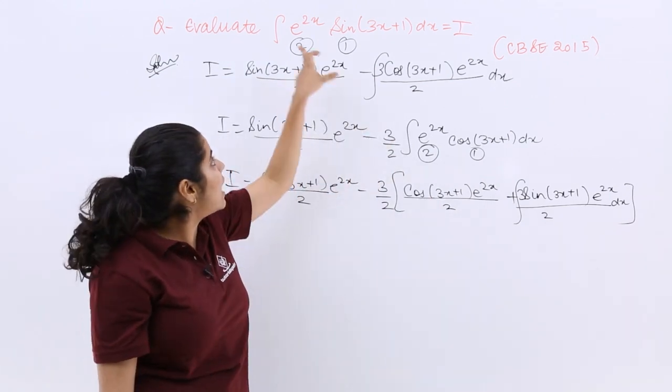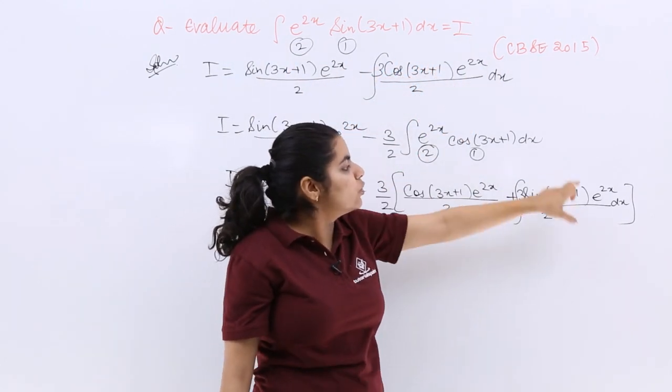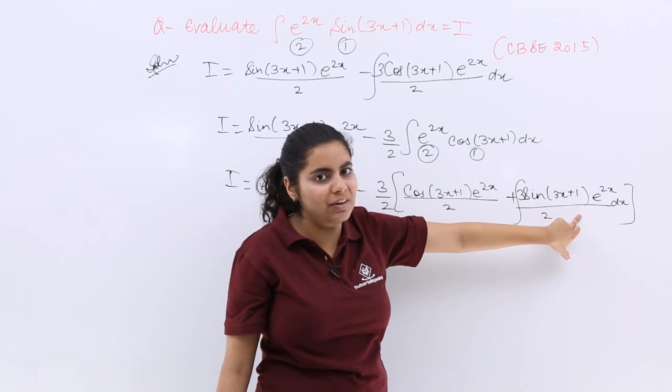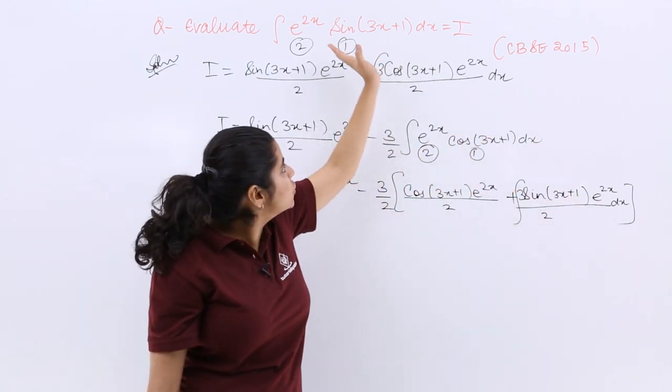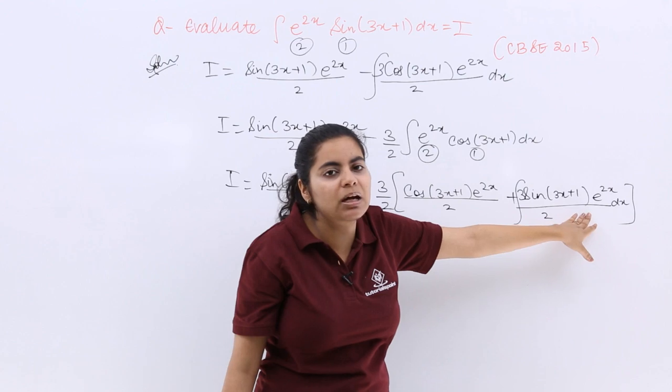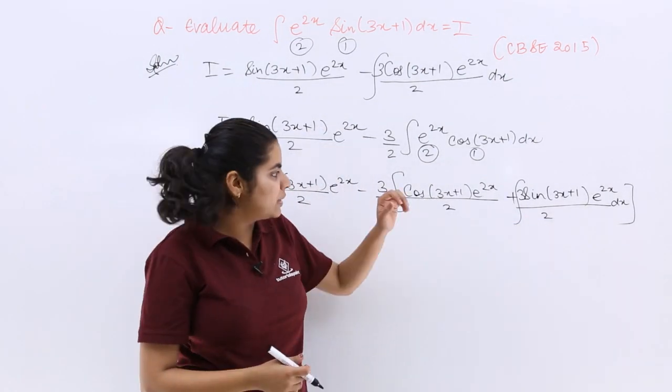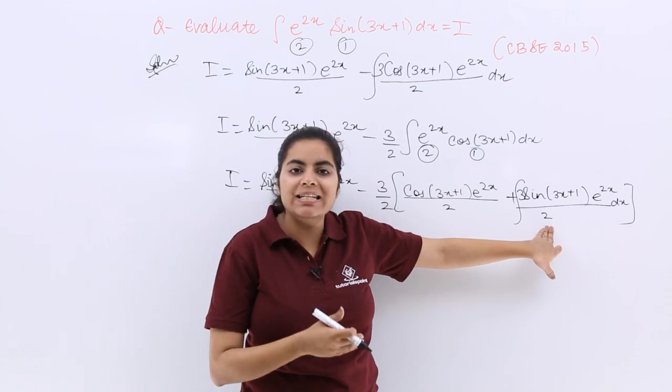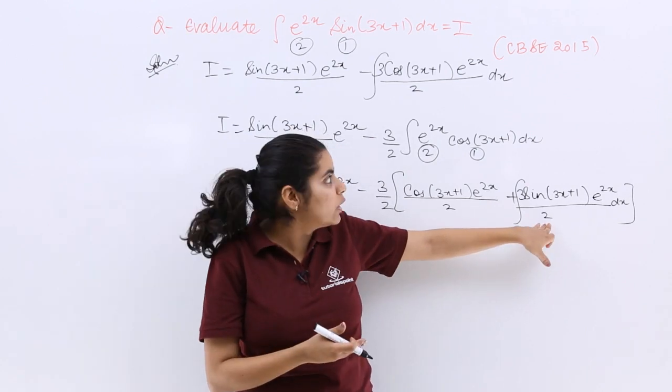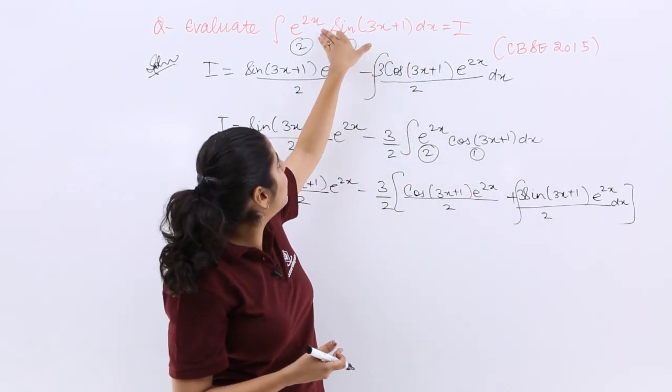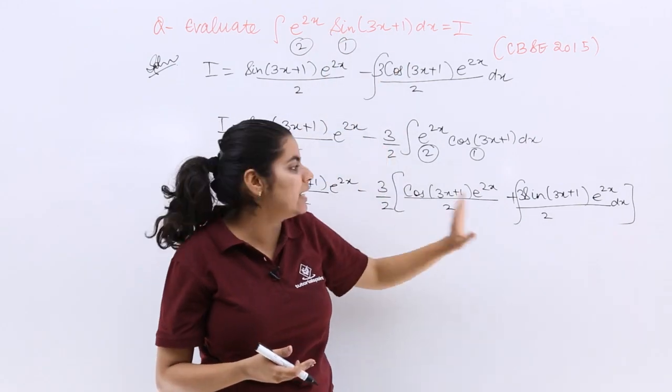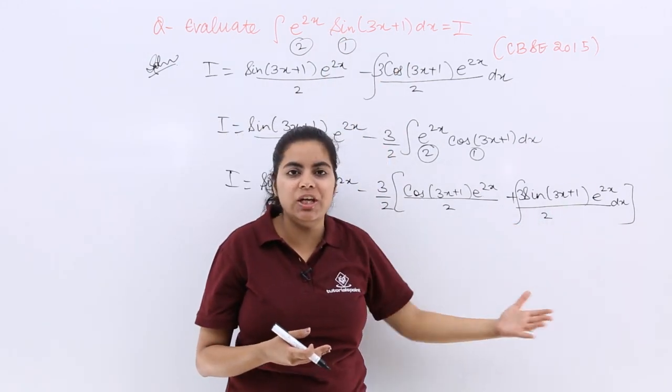As you know the question was I, here it is I. So here also I can substitute by I, right? Because integration of the question itself is coming out to be here, and that is what I needed to evaluate. I told you that here it should be I only because sin(3x+1) e raised to the power 2x integration is I. So let me change it with I.